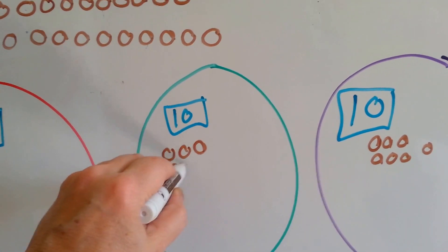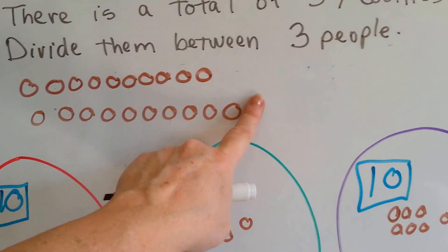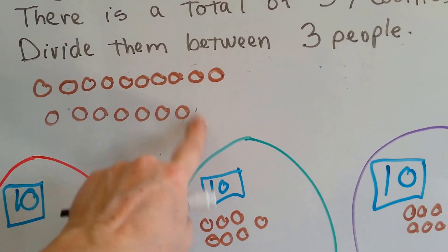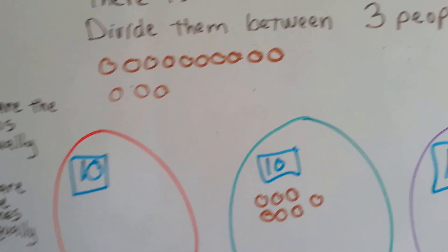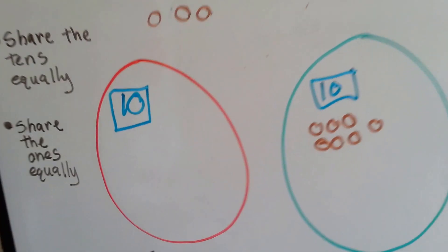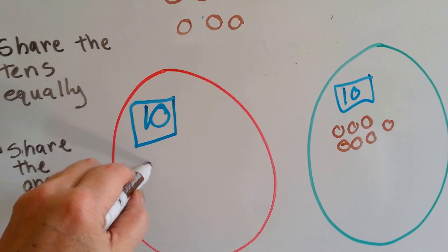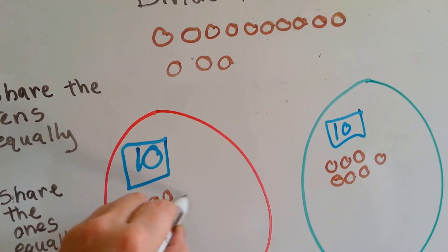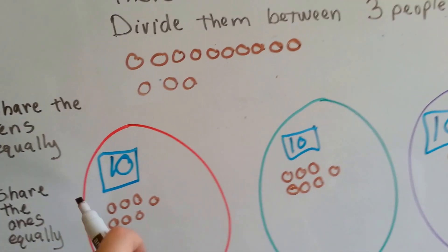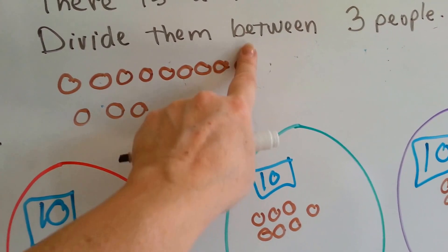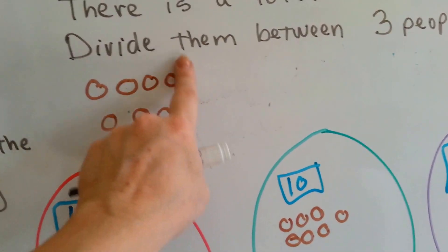We've got to share these ones equally. So we count out seven for Tala — one, two, three, four, five, six, seven — and take those away. Now we need to give Emma seven. We share these ones equally — one, two, three, four, five, six, seven — and take those seven away too.